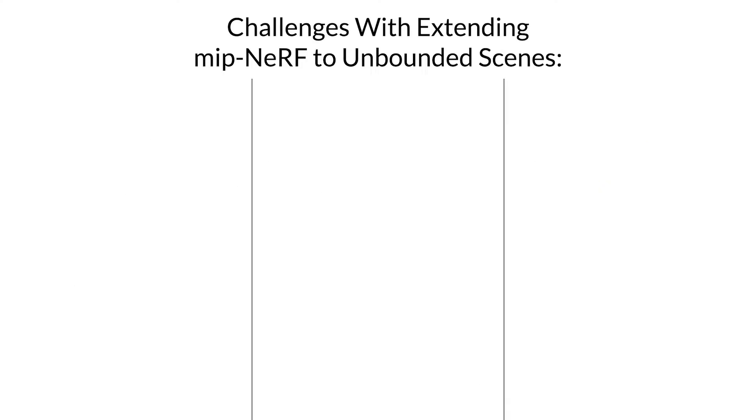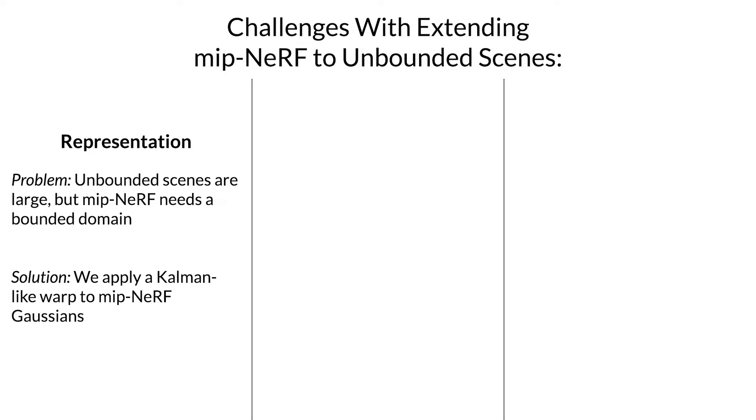There are three major problems with trying to get MIPNERF to work well on unbounded scenes and the three main contributions of this work are intended to address those problems. The first problem is in terms of representation. Unbounded scenes are by definition unbounded, but MIPNERF needs its inputs to be in a bounded coordinate space. To deal with this we warp the MIPNERF gaussians into a non-euclidean space using a technique that looks a lot like an extended Kalman filter.